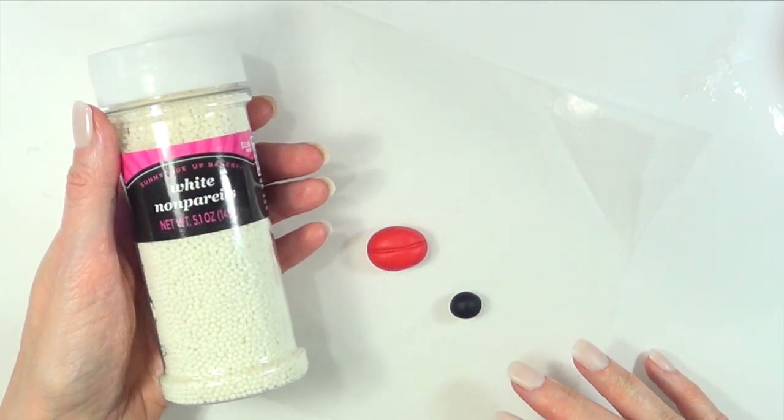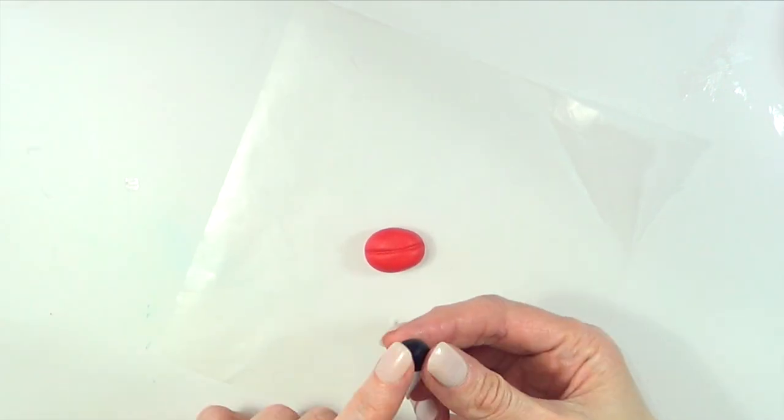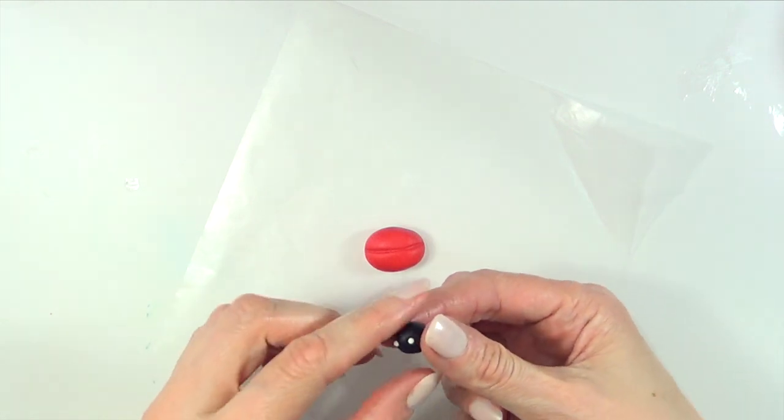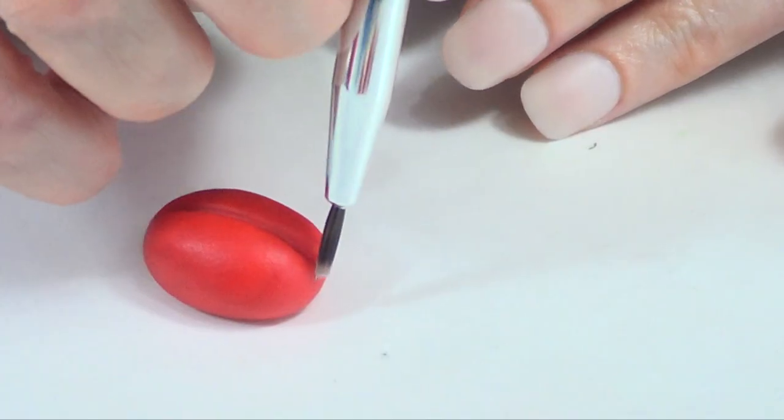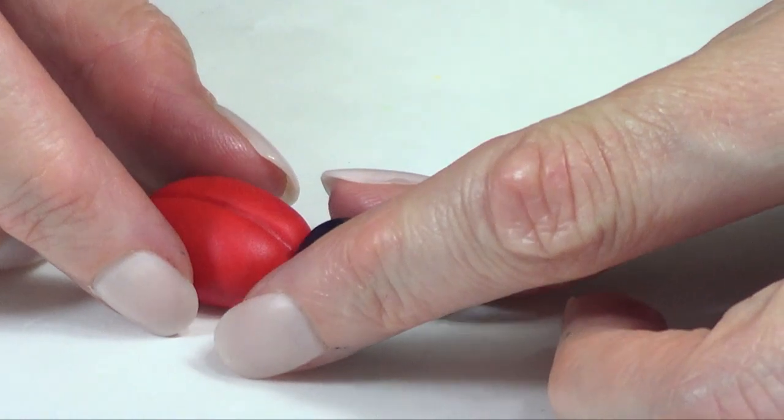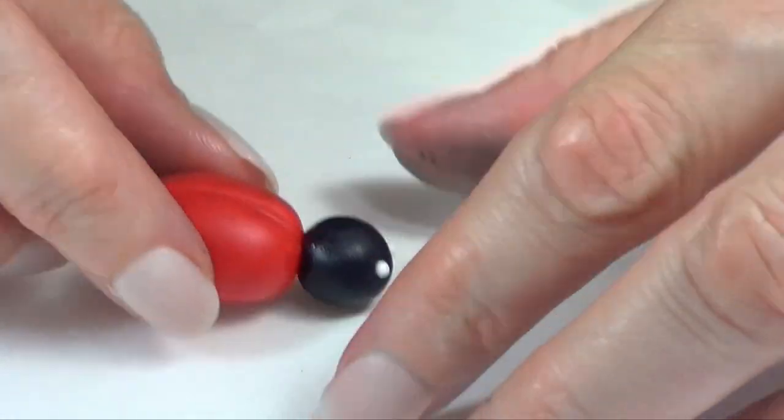Just going to be rolling this into a small tiny ball. And then I'm going to be taking white sprinkles, two of them per ladybug. And I'm just going to be placing them as eyes. And again, I'm going to be using some water to attach those two shapes together. And I'm just going to let the whole thing dry.